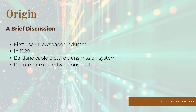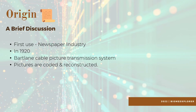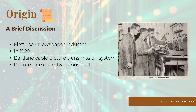Here we come to the origin of digital image processing. The newspaper industry is the place where the very first application of digital image was used. In earlier times, pictures were sent between London and New York by submarine cables, and this kind of transmission took up to a week. So in the early 1920s, the Bartlein cable picture transmission system was introduced. They used specialized printing equipment; pictures were coded for transmission through cable and reconstructed at the receiver's end, reducing transmission time to 3 hours.